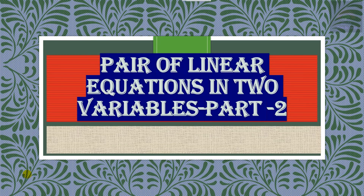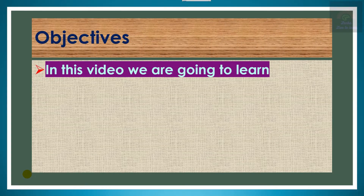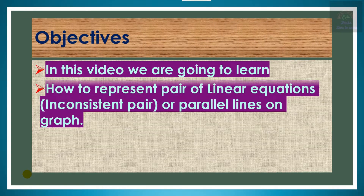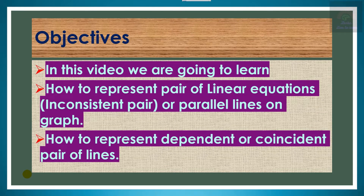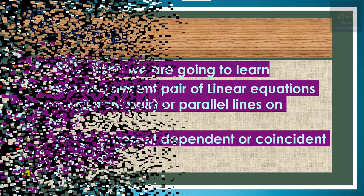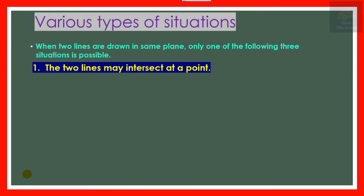Hi, hello and welcome to another class. Today we will learn about the continuation of Part 1: Pair of Linear Equations in Two Variables, Part 2. In this video we are going to learn about the representation of inconsistent lines, pair of lines, and coincident lines or dependent lines, and the graph. First of all, let us recall the various types of situations.